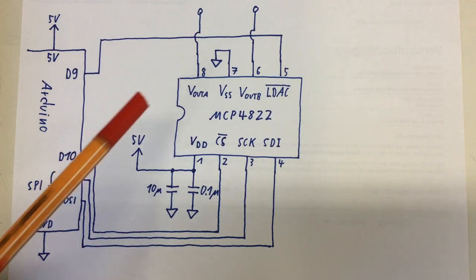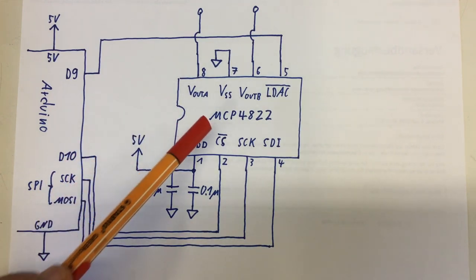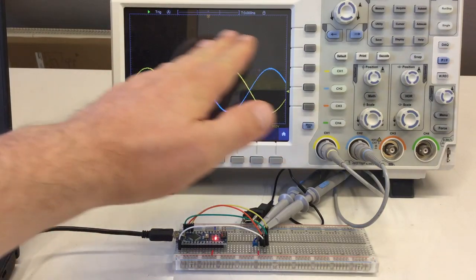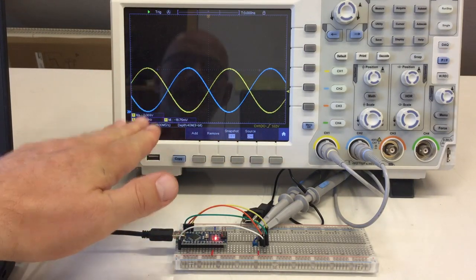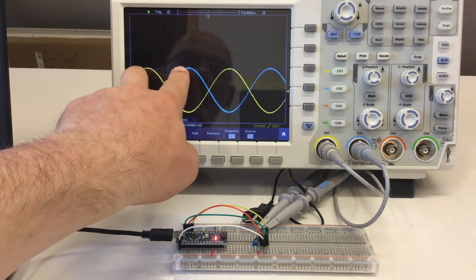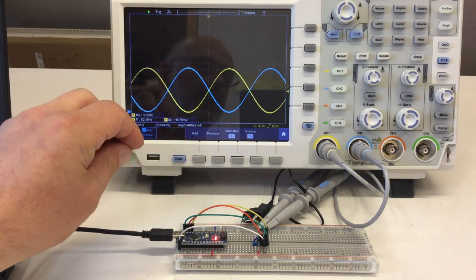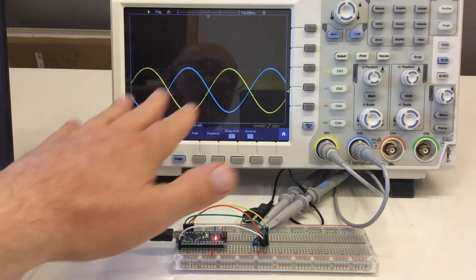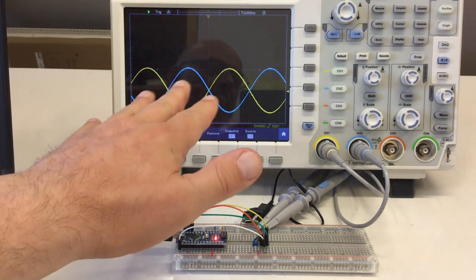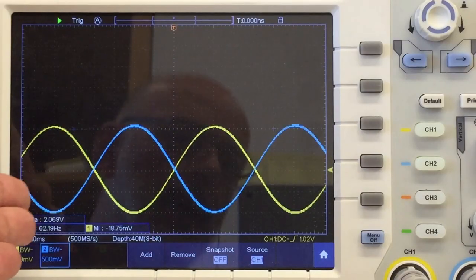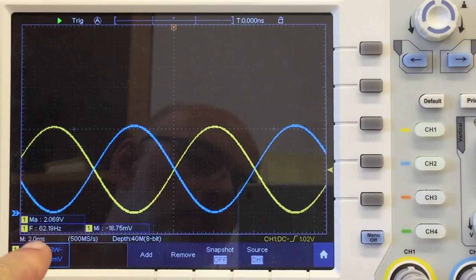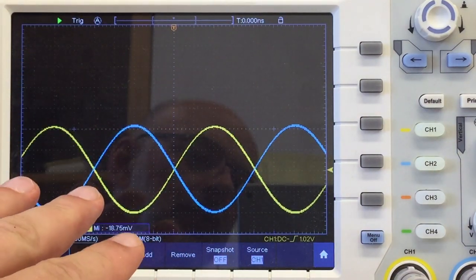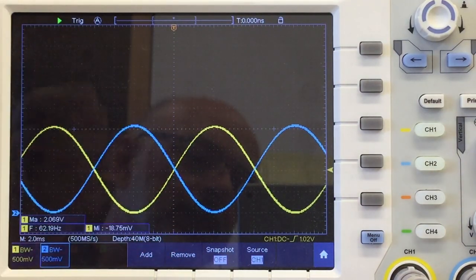So let's see what we can get out of that thing. And what we can get out of it are two really nifty looking sine waves. Phase shift 180 degrees. And we will have a look at the code in a minute. But just appreciate it for a second. I mean, 62.19 hertz sine wave, absolutely stable. It doesn't get any better, does it?